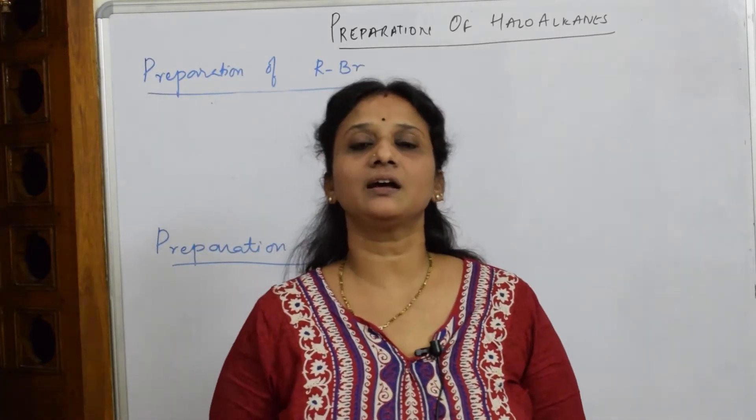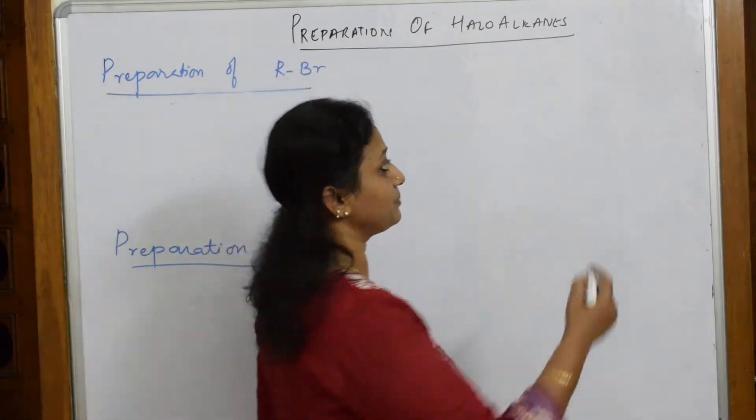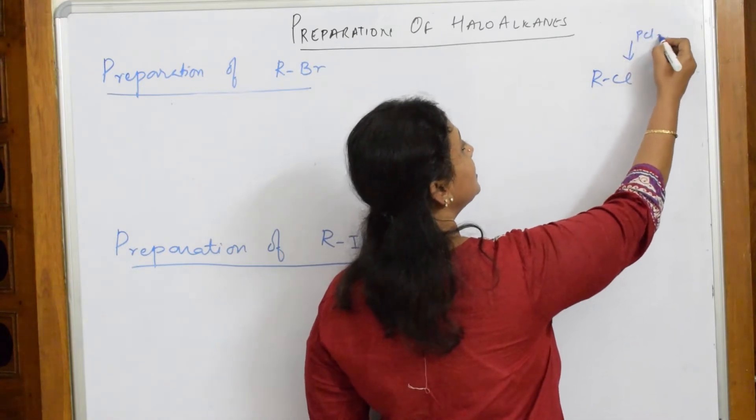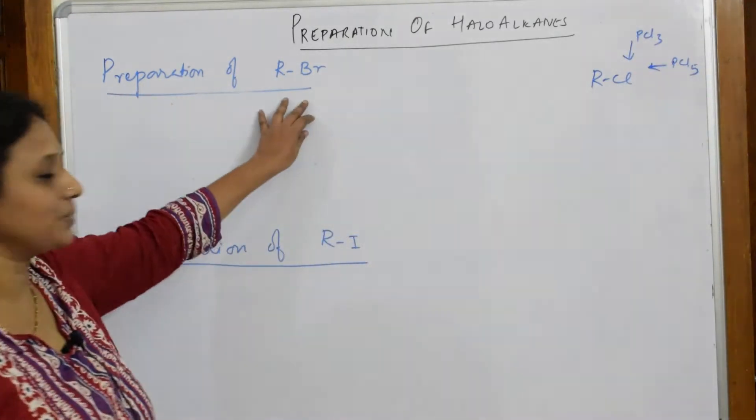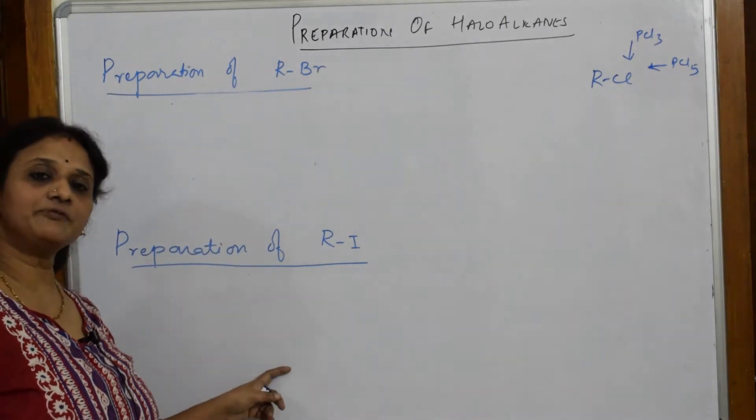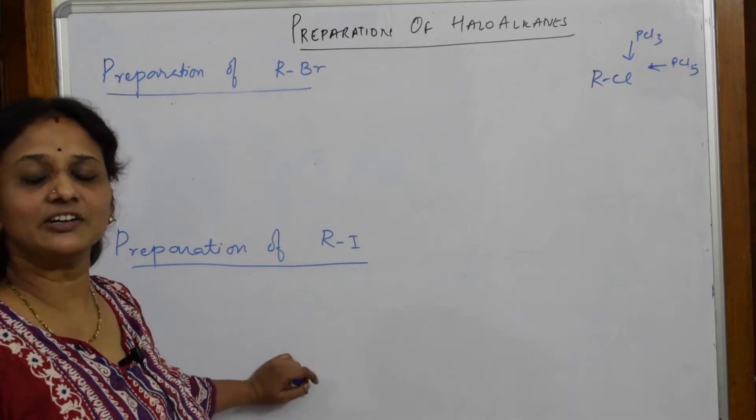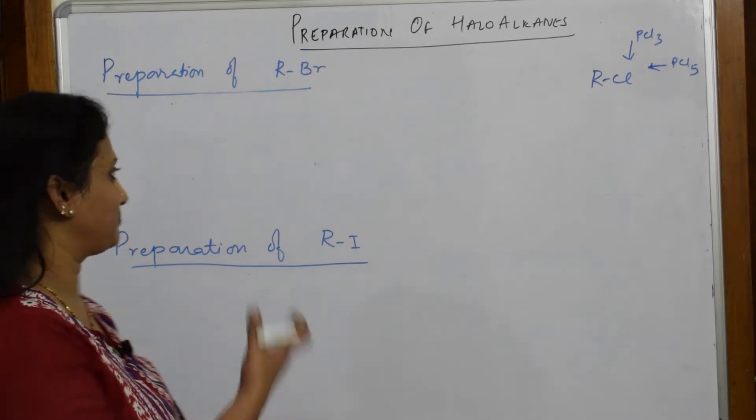So in my previous video we have prepared haloalkanes, that is chloroalkane using PCL3 and PCL5. I prepared RCL from PCL3 and PCL5. Now we are going to prepare RBR and RI using red phosphorus, that is highly reactive phosphorus which is tetravalent, and bromine for RBR and iodine for RI. Let us write.